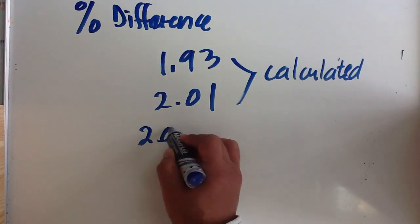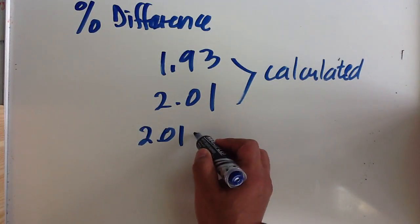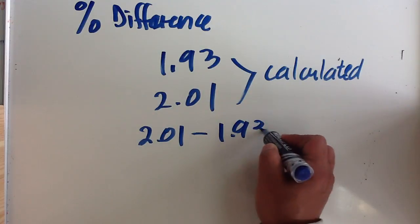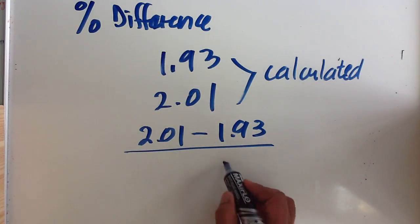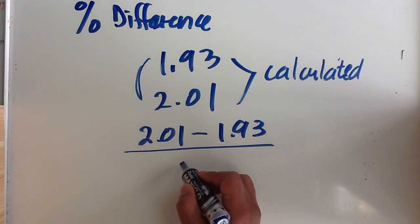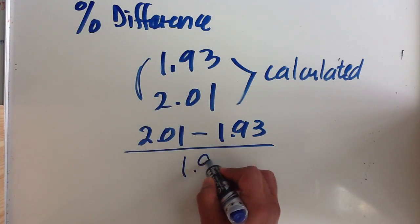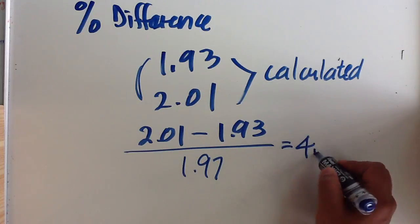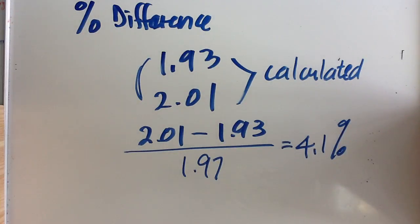you would take your 2.01, subtract your 1.93, and then divide it by the mean of these two, which in this case is 1.97. So here the percentage difference would be 4.1%.